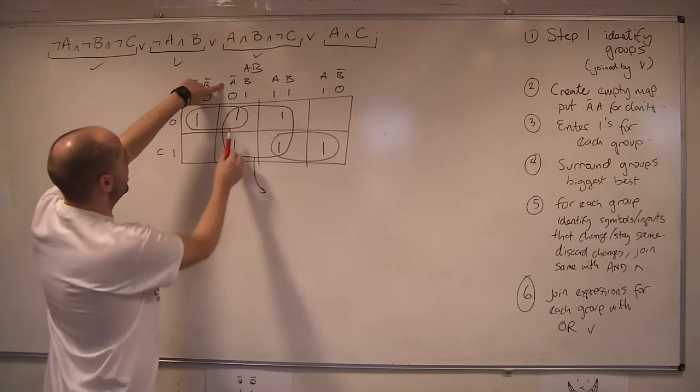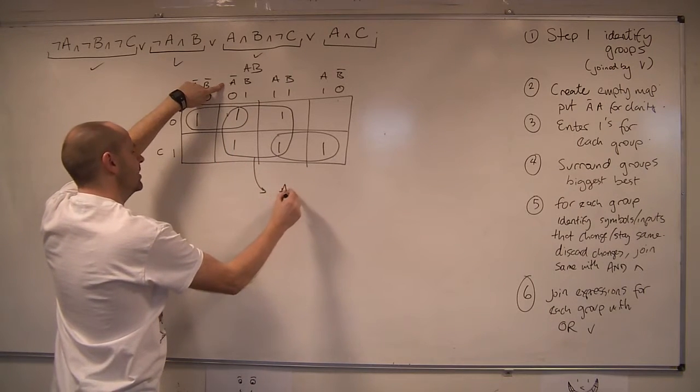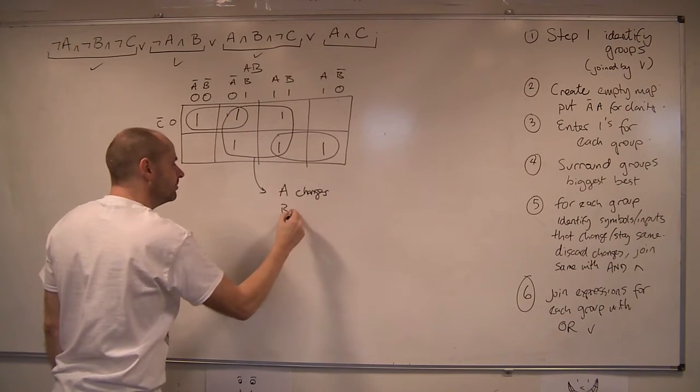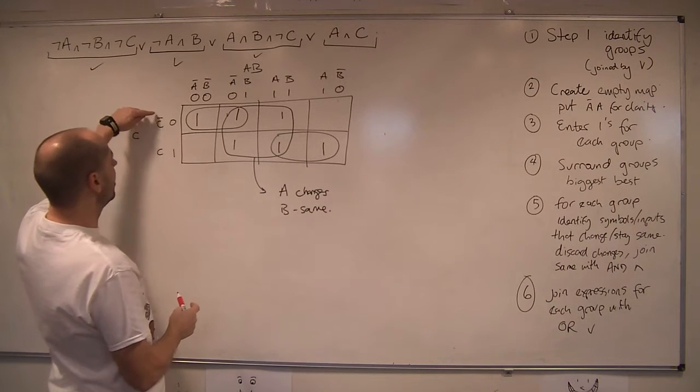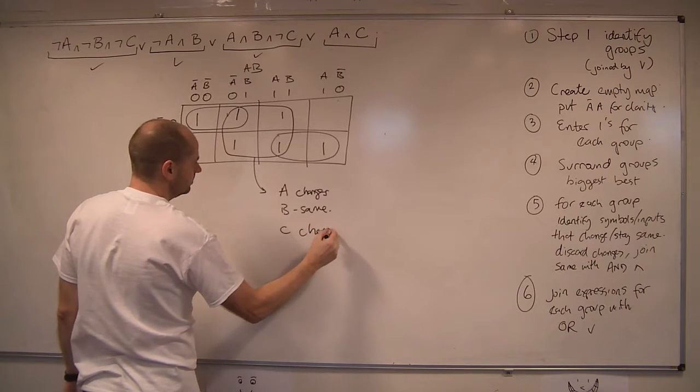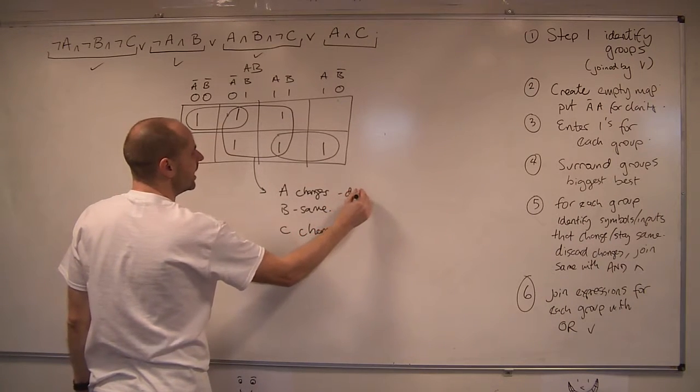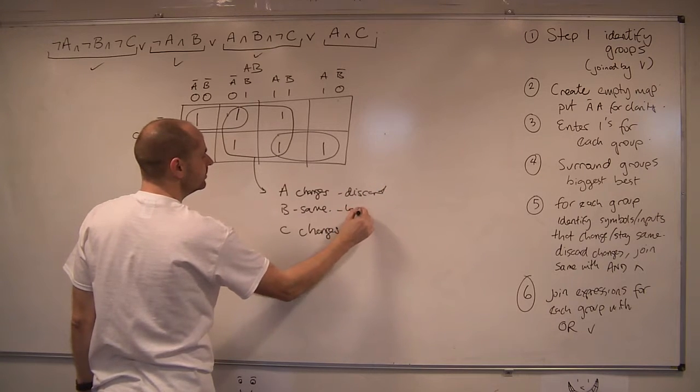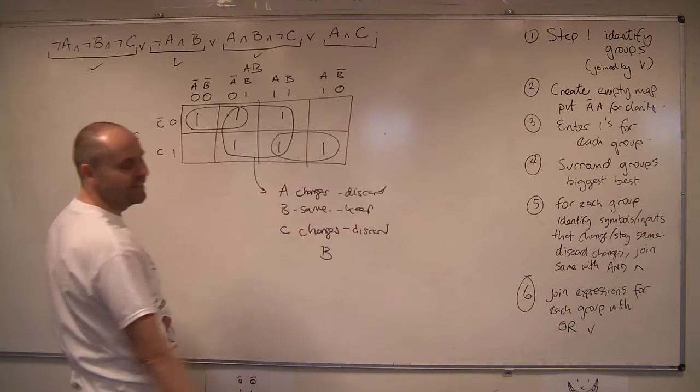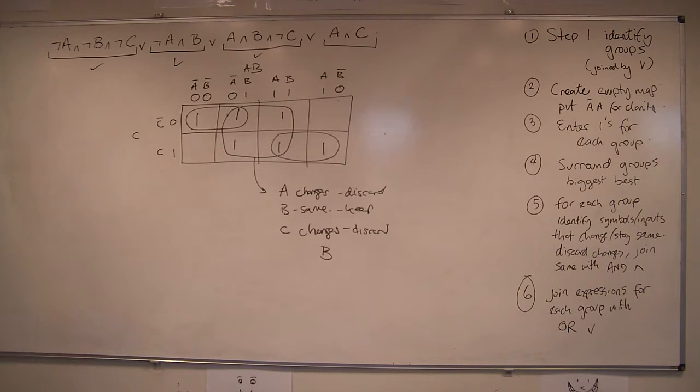So let's do the big square first. Right. So looking at this, I have got not A and A. Oh, so A changes. I have got B and B. B stays the same. And we've got, because it goes through both rows, we have got C changes. So we're going to discard the A. We're going to keep the B. We're going to discard the C. So we end up with that part B. Nice. We like that. We like that. We reduced it. One input. Great. The bigger the box, the simpler it's always going to be.